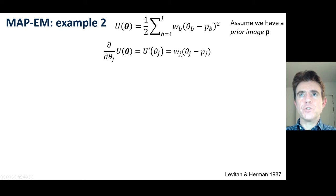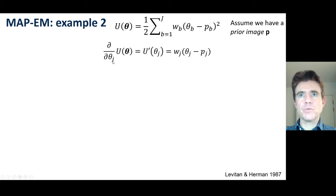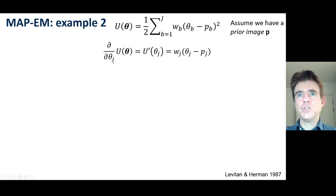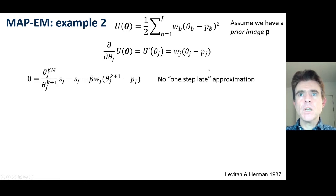Working through with just such a simple expression for the energy function, we can easily take the partial derivative. The quadratic and the summation go to a very simplistic expression, because it's only the partial derivative with respect to a single pixel value theta_j.